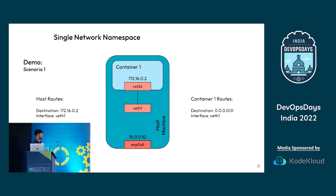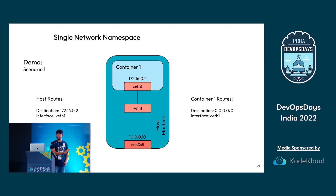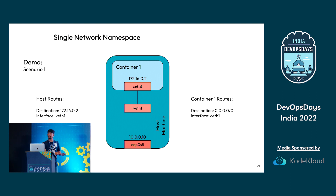In container one there is only one network interface, so traffic going out — whether to the host or to the internet — the destination can be anywhere, just send the traffic through ceth1. I hope this diagram is clear to everyone before I jump back to the terminal.